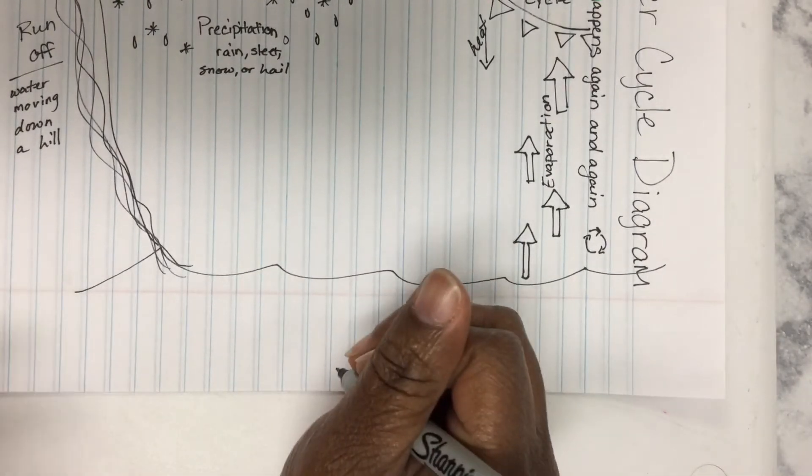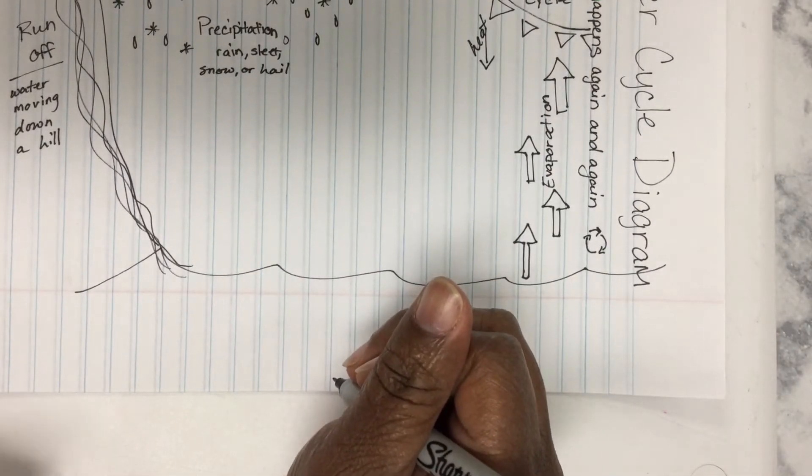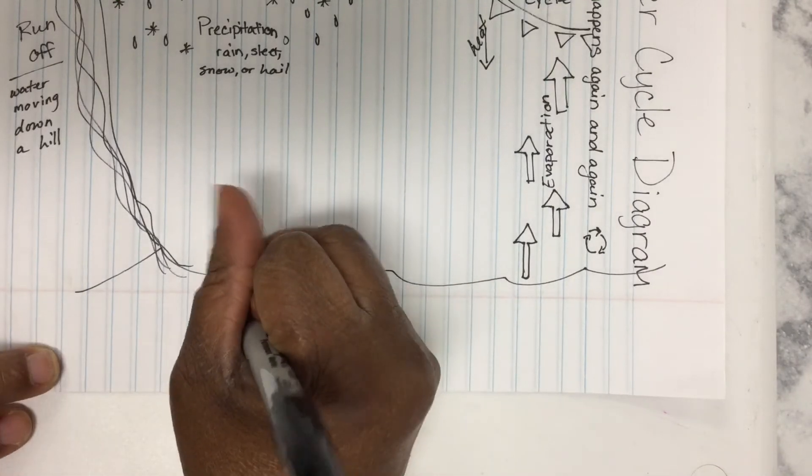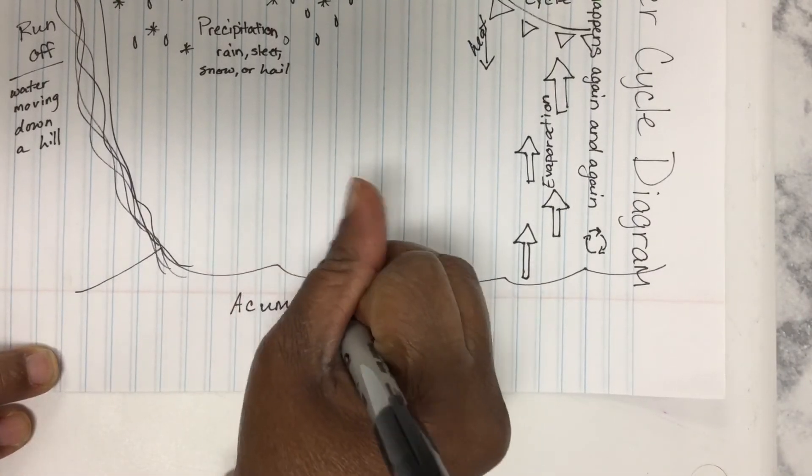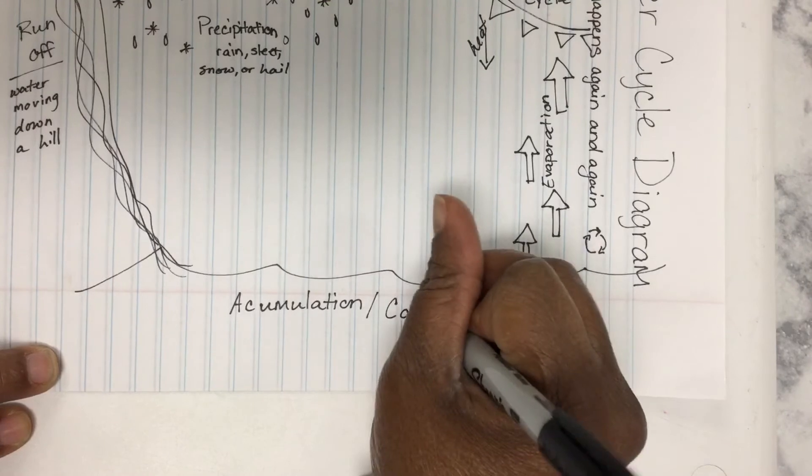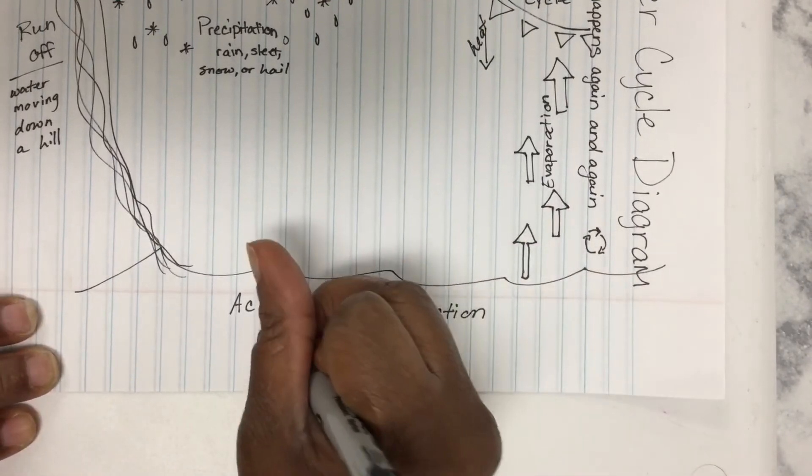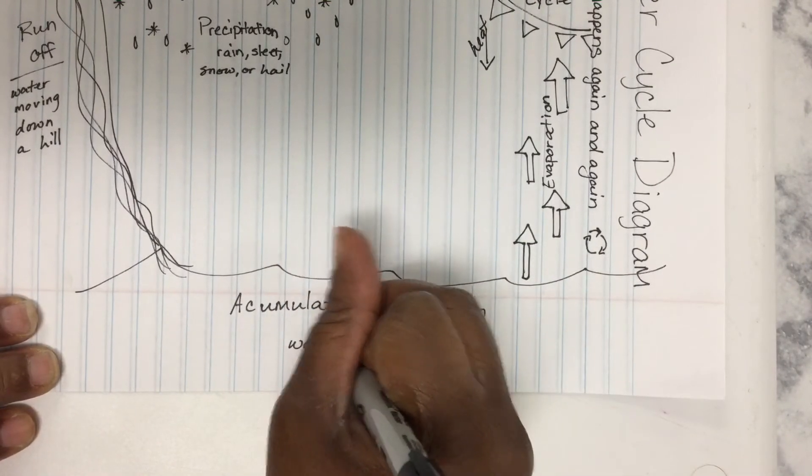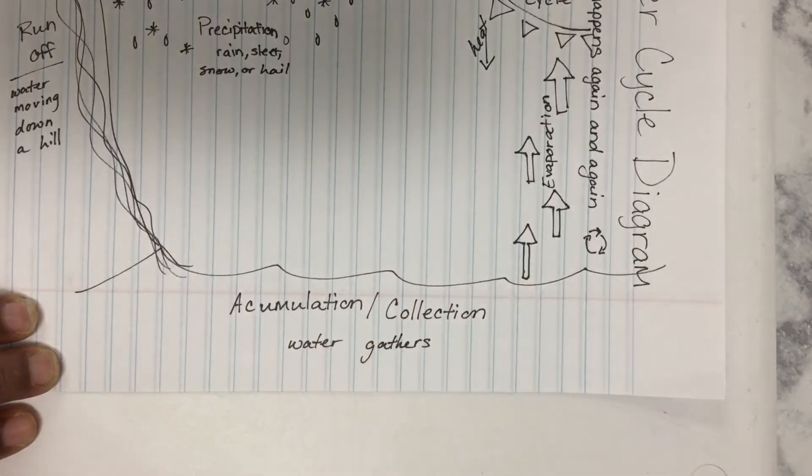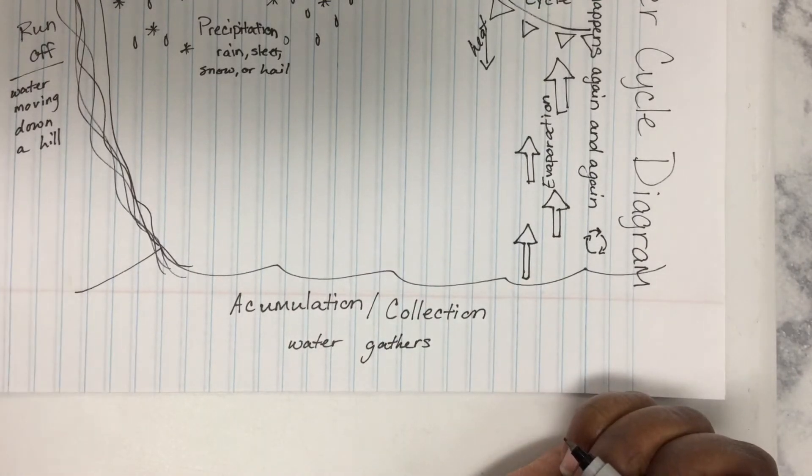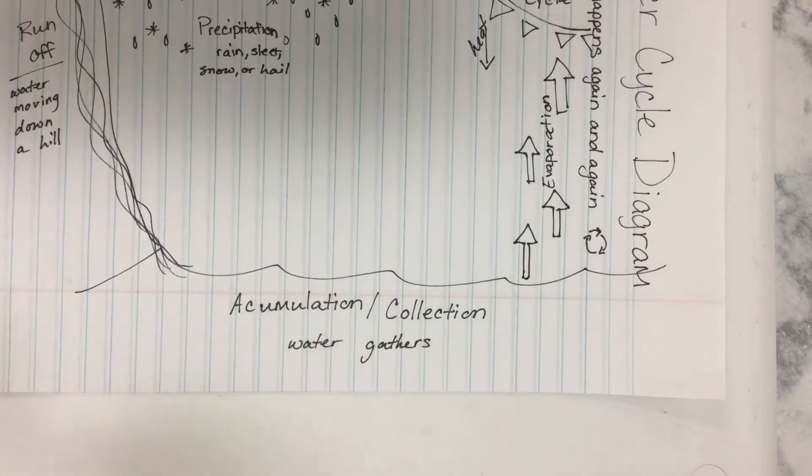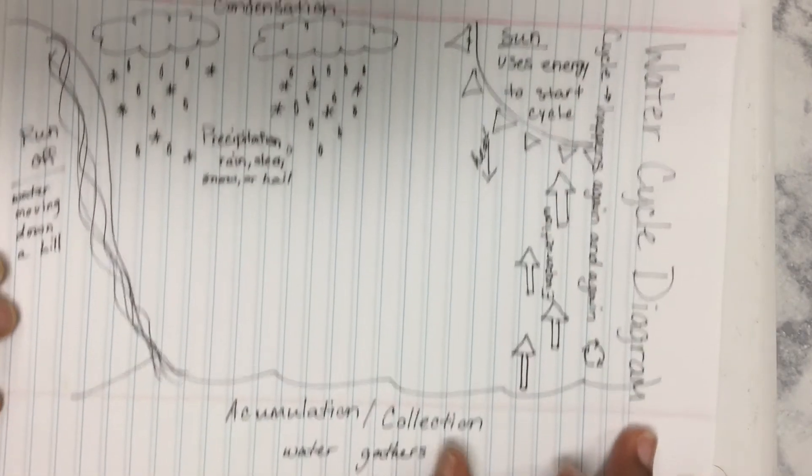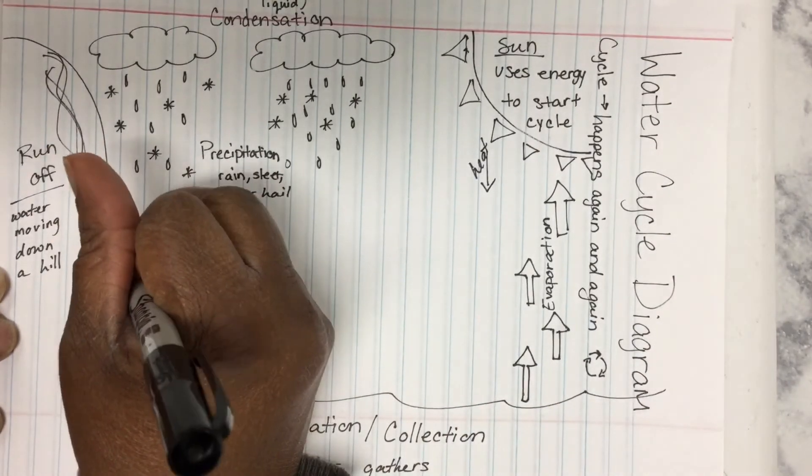This is called two things, accumulation or collection. You could see it both ways. This is just where water gathers. Last part I want to talk about is transpiration, which is something you may or may not have heard of before. Let's say you have a plant.